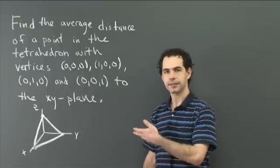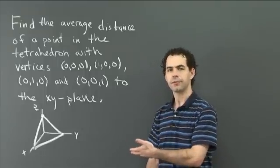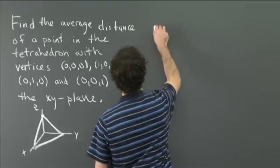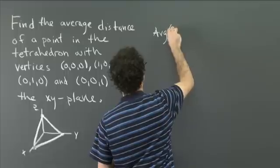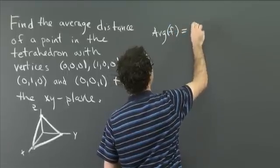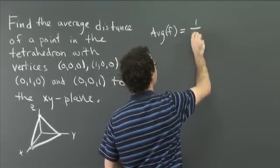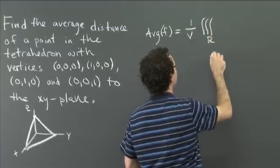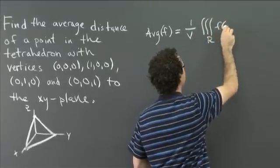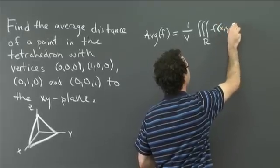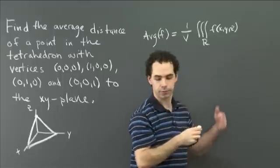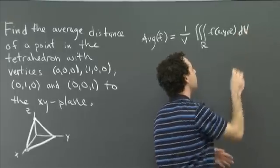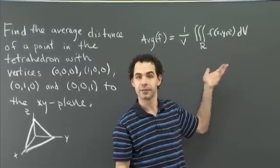Hopefully you had some luck with this problem. Let's get started. For an average value problem, the average value of a function f over a region R is going to be 1 over the volume of the region times the triple integral over your whole region R of the function value f(x, y, z) with respect to volume — so I'll write dV. And then to evaluate this, you set it up as an iterated integral.